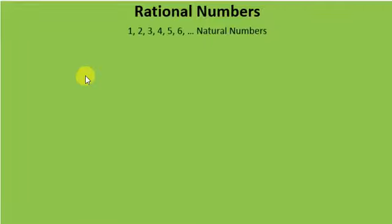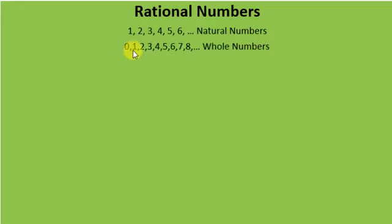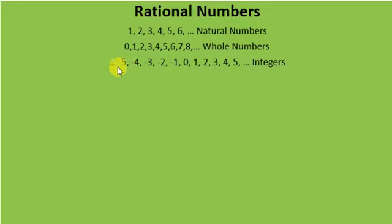You might have seen numbers like 1, 2, 3, 4, 5, 6, and so on. You know these are called natural numbers. Similarly, the numbers which start from 0, 1, 2, 3, 4, and so on — we call them whole numbers. And the numbers which include the negative of integers and the whole numbers, that means 0, 1, 2, 3, 4, 5, and so on — we call them integers.